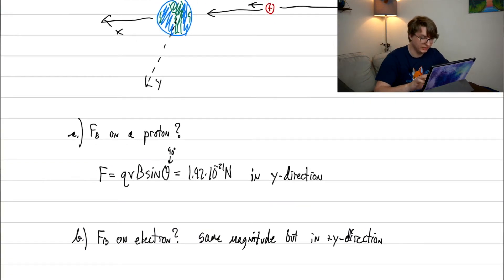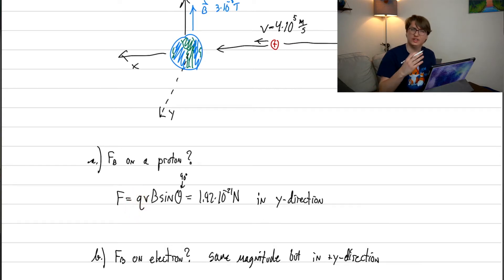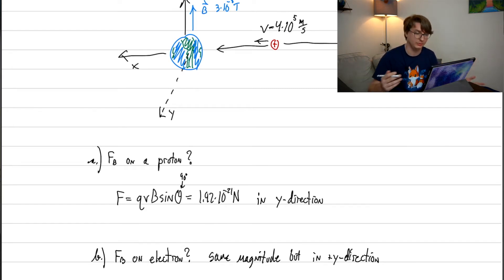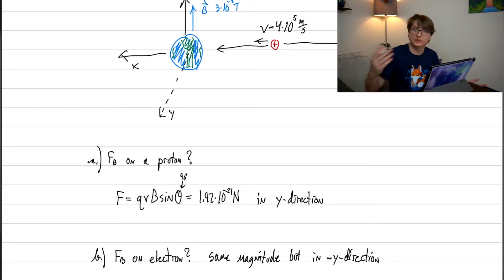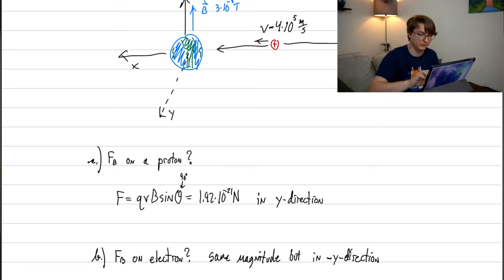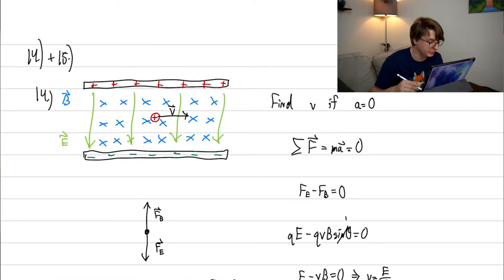What if we had an electron instead? The only thing that changes is the sign of the charge. When we do the right-hand rule, the assumption is a positive charge — just like with electric fields, for a negative charge you just reverse the direction at the end. So for an electron the force would be in the negative y direction, the opposite of before.